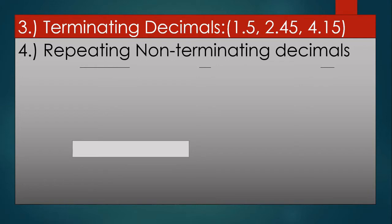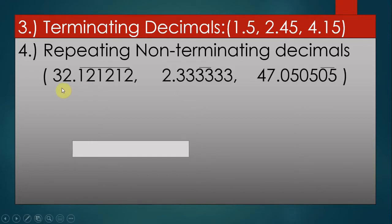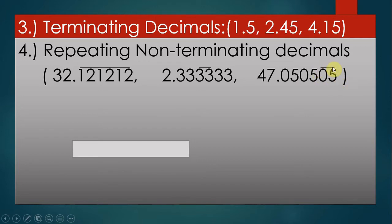Another subset of rational numbers is what we call repeating non-terminating decimals. For example, 32.1212... — the bar above, called a vinculum, means the number is repeated infinitely. So 2.3333... has a vinculum over the 3, meaning it repeats infinitely. Similarly, 7.050505... has a vinculum over 05. These terminating decimals and repeating non-terminating decimals are subsets of rational numbers because we can convert them into fractions.